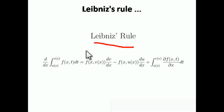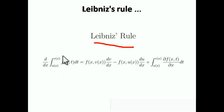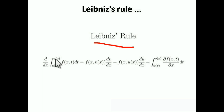Here you can see a function: the integration from u(x) to v(x) of f(x, t) dt. We have to find the differentiation of this particular integration. We cannot cancel out the differentiation and integration because it is a definite integration with variable limits — v(x) and u(x) are variables. So for that, this particular rule is applied.